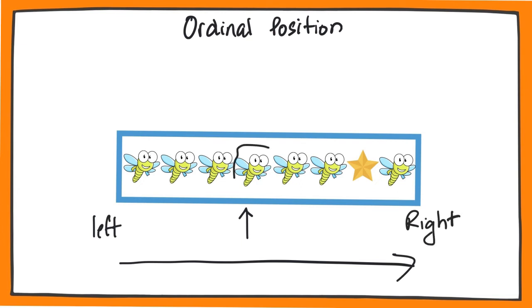So, what is the ordinal position of this insect? Let's count. First, second, third, fourth. That insect is located in the fourth position.